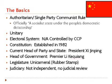When we talk about China, they are an authoritarian single-party communist system. Officially they would denote themselves as a socialist state under the people's democratic dictatorship, denoting that the people are the ones who embrace authoritarian rule. They're a unitary system of government, just like the UK. They don't really have an electoral system comparable to Russia, the UK, Mexico, Nigeria, or Iran. The Constitution was established in 1982.